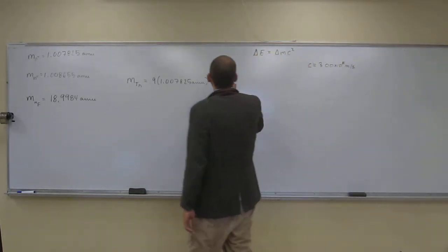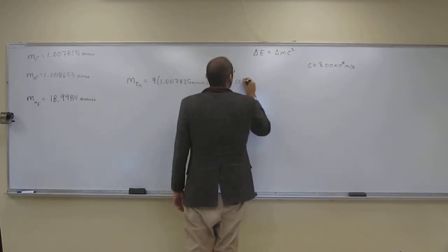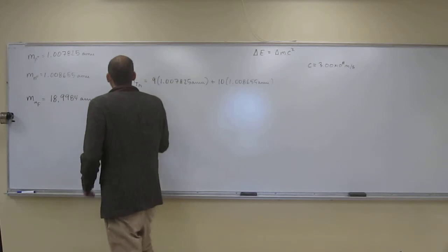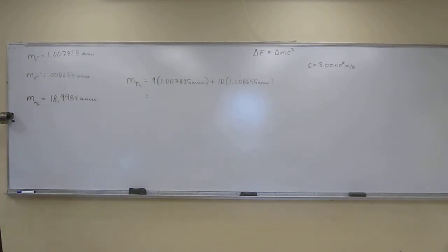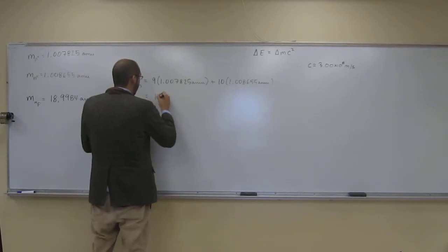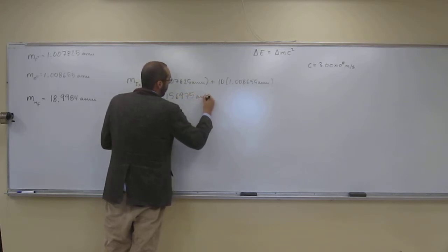So we're going to multiply ten times the mass of one neutron: 1.008655 AMU. From there, we can get the total mass of the nucleons put together. So try this while I'm doing it and make sure you're getting the same answers.